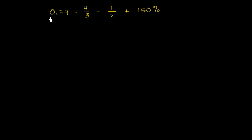So let's do them one at a time. So 0.79, this is the same thing as 79 hundredths. So I'll just write it that way. So this is the same thing as 79 over 100. Then, of course, we have minus 4 thirds, minus 4 thirds. Then we have minus 1 half, minus 1 half.